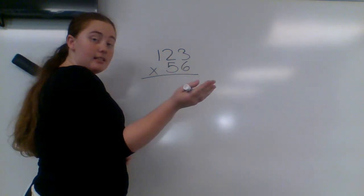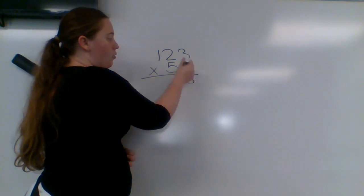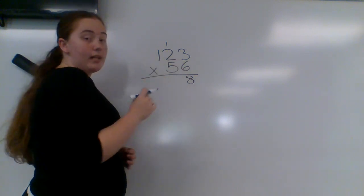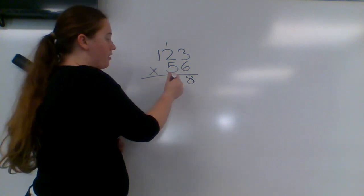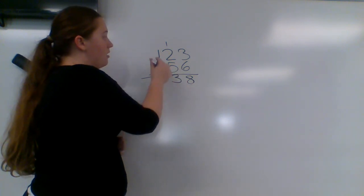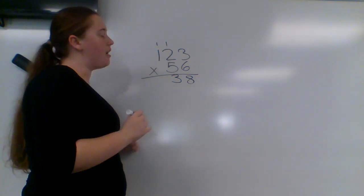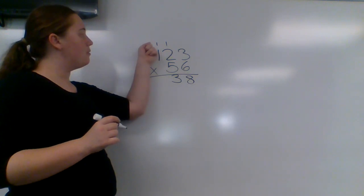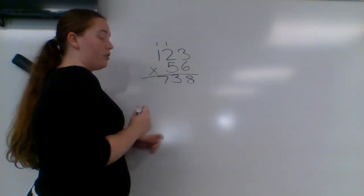We're still doing the same thing. We're going to ignore that 5 and just do 6 times 123, just like it was a normal multiplication problem. So 6 times 3 is 18, so we'll put the 8 down here. 1 goes up here because it's being carried. 6 times 2 is 12, plus the 1 up here is 13. 1 gets carried up there because it's the next place value over. And then we're going to do 6 times 1 is 6, plus 1 is 7. So 738 goes right here.